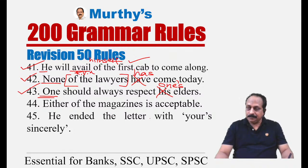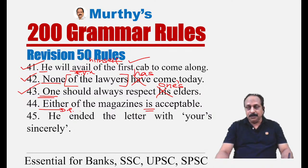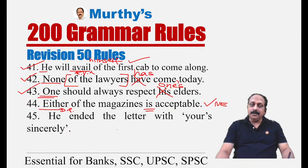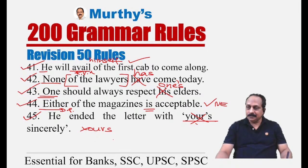Sentence forty-four: 'Either of the magazines is acceptable.' Distributive pronouns — either, neither, each — always take a singular verb. 'Is' is correct. No error. Sentence forty-five: 'He ended the letter with yours sincerely.' Possessive pronouns — yours, ours, theirs, hers — never take an apostrophe and the letter S. 'Yours' is a possessive pronoun and has no apostrophe. The sentence is correct — no error.